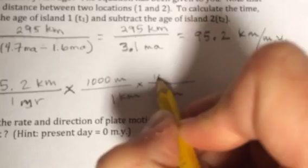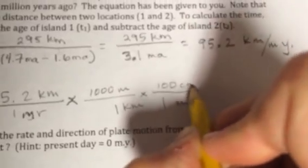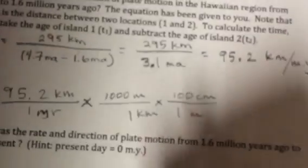We would just then put times one kilometer. We know there's 1,000 meters in every kilometer. And we have 100 centimeters in every meter. Okay? Now, this 1 MY, we can fix that in a minute.